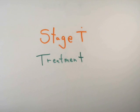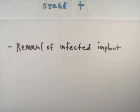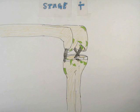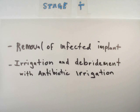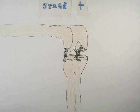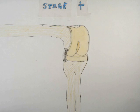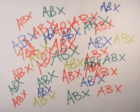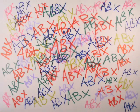Stage 1 treatment is the removal of the prosthesis and the irrigation and debridement of the wound with antibiotic irrigation. It also involves the placement of an antibiotic impregnated spacer for a knee, or the placement of antibiotic beads for a hip. These are then followed by an aggressive round of antibiotic therapy.